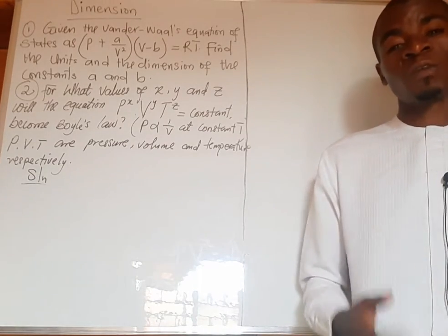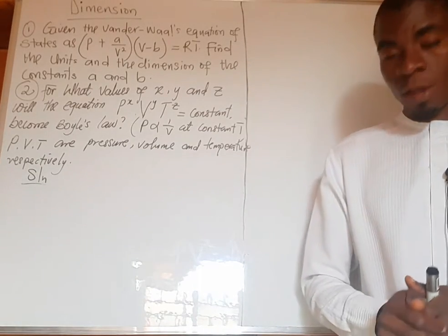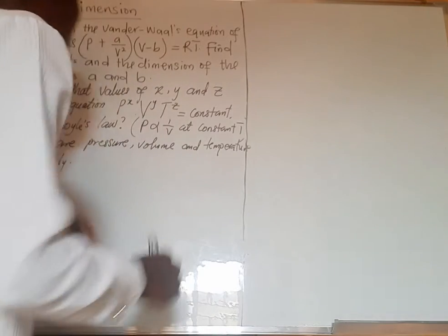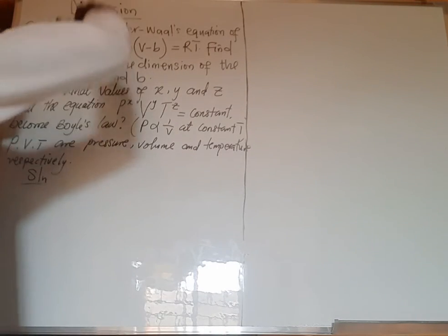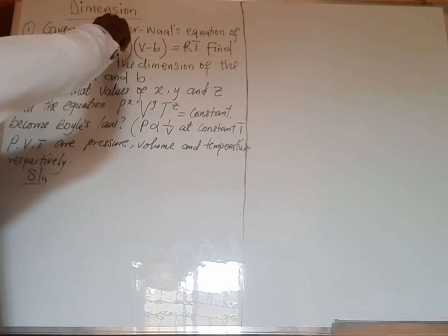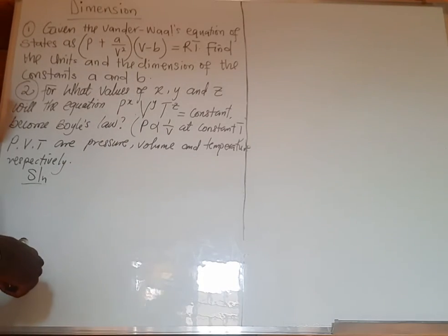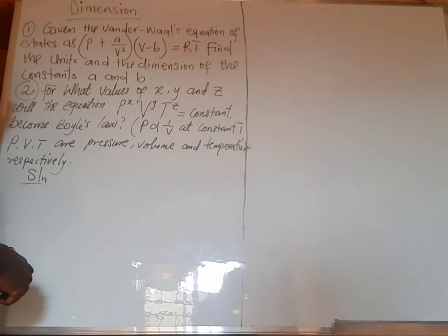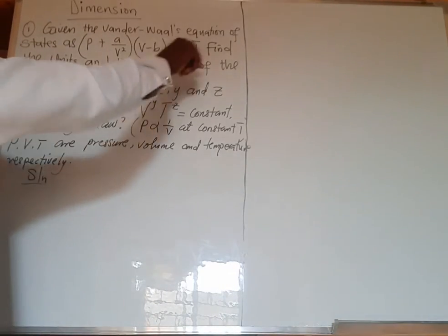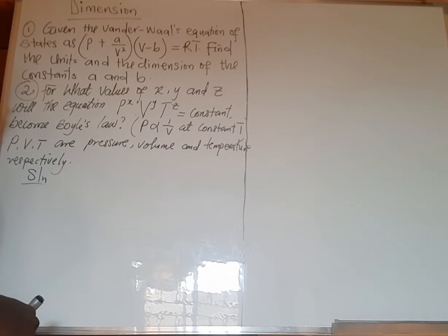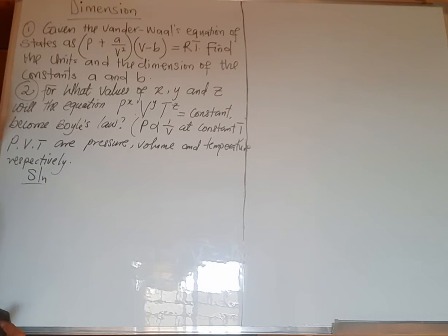Let's see how we can solve this question. Given the van der Waals equation: P plus a over V squared, open bracket, V minus b, close bracket, equals RT. This is the van der Waals equation. To find the dimension of 'a', the first thing we need is the relationship between P, V squared, and 'a'.